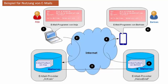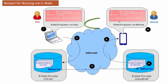Bertram kann die Nachricht dann über sein E-Mail-Programm auf seinem Tablet oder Smartphone abrufen und lesen. Er sieht dann die Adresse des Absenders, seine eigene Adresse, den Betreff und den Text.